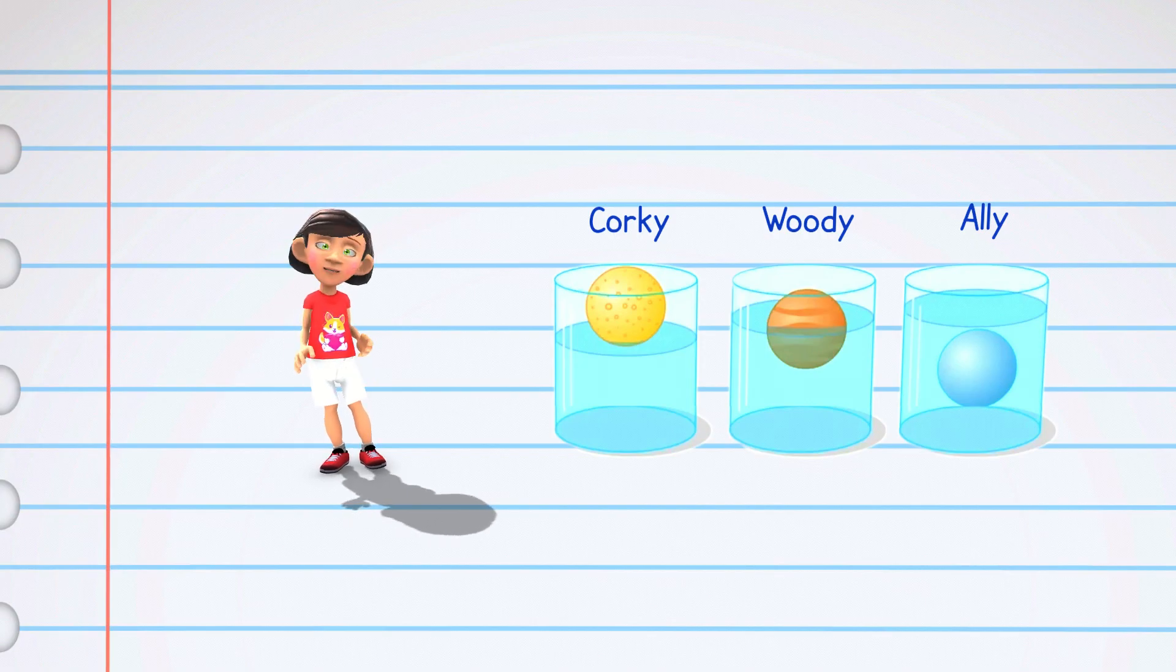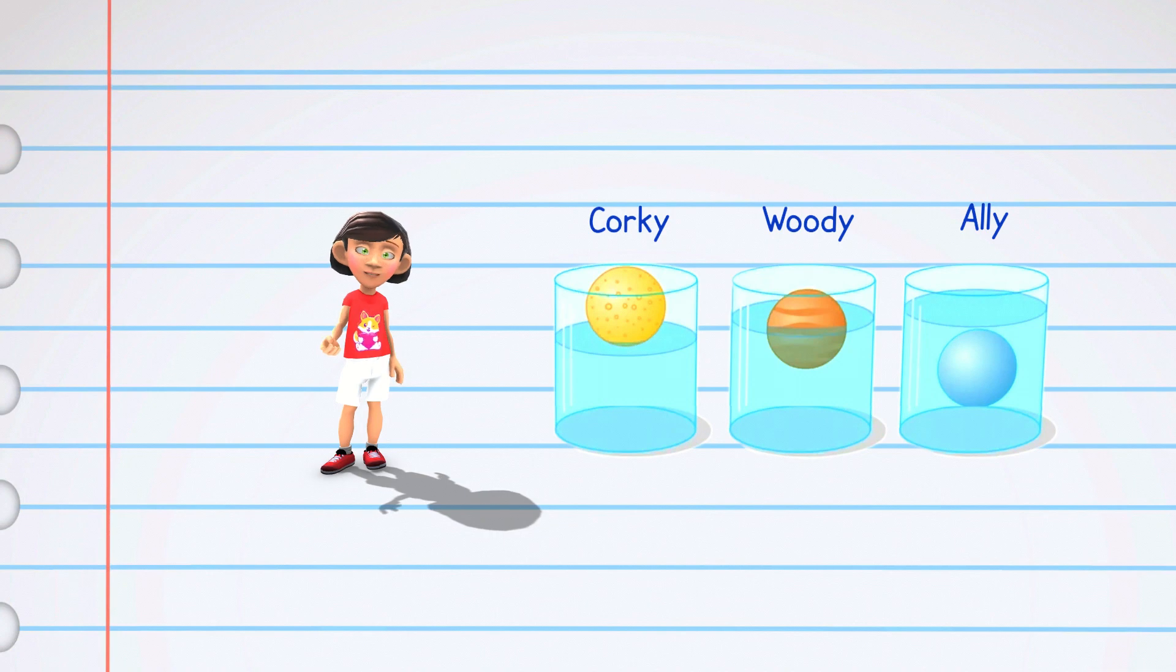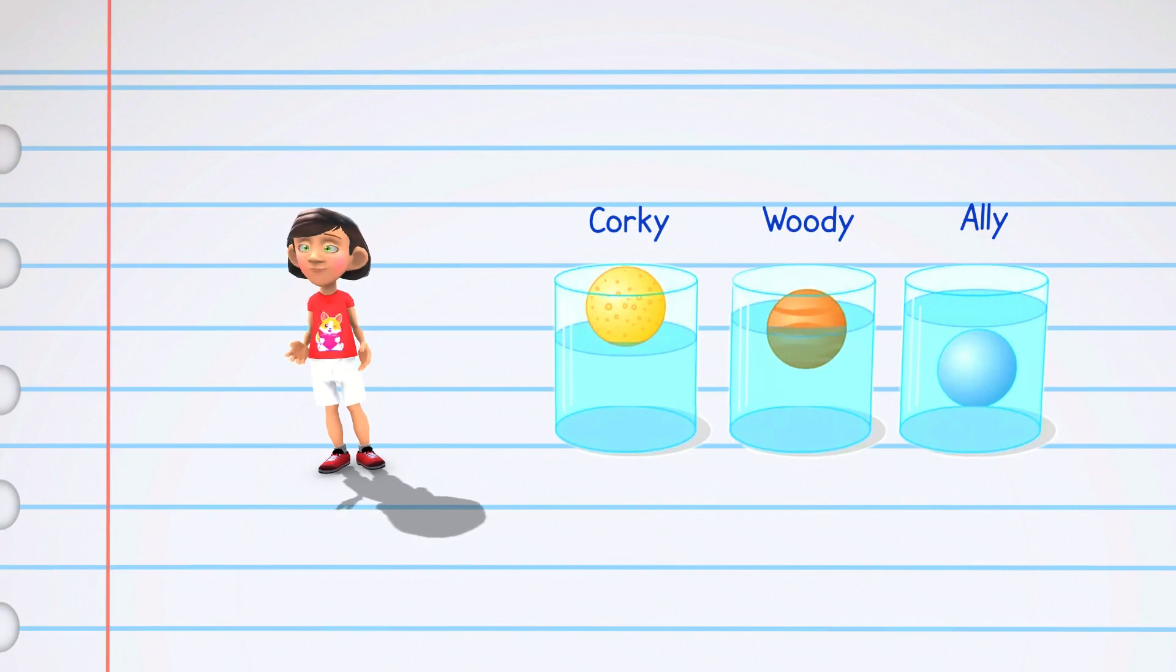So when we put these friends in the water, we see that things can be light like Corky, middleweight like Woody, or heavy like Ally. The way things act in water tells us about their density, or how packed they are with stuff. It's like a watery adventure that helps us understand the secret of weight and water.